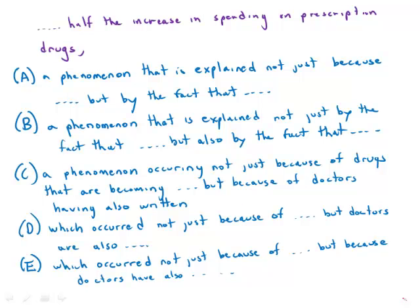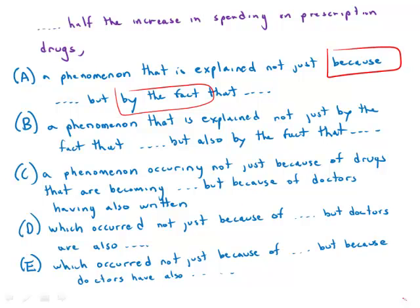Answer A is just an abomination — it is so horrible. It reads: 'a phenomenon that is explained not just because but by the fact that.' Because and by the fact that are not the same construction, so they are not parallel. This is not correct.